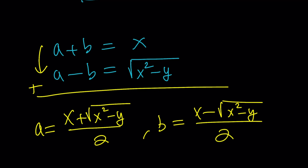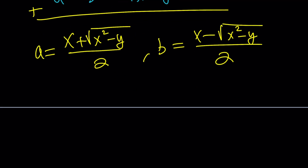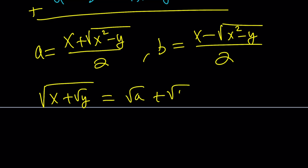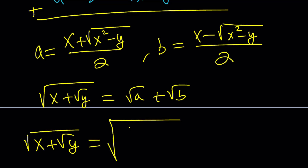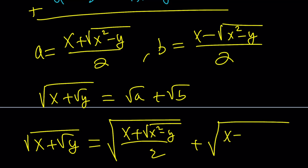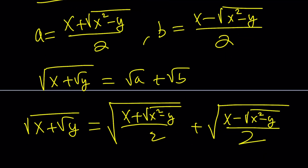Since we assumed the square root of x plus root y equals root a plus root b, we substitute our values: the square root of x plus root y equals the square root of (x plus the square root of x squared minus y) over 2, plus the square root of (x minus the square root of x squared minus y) over 2. This matches our formula from Method 1.